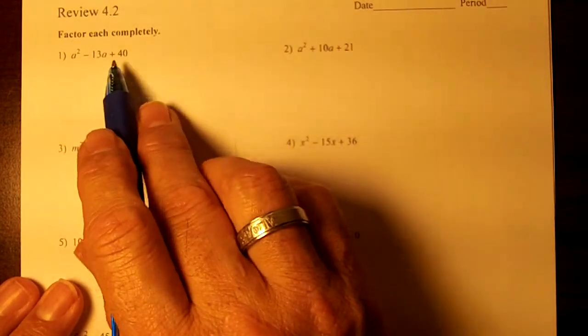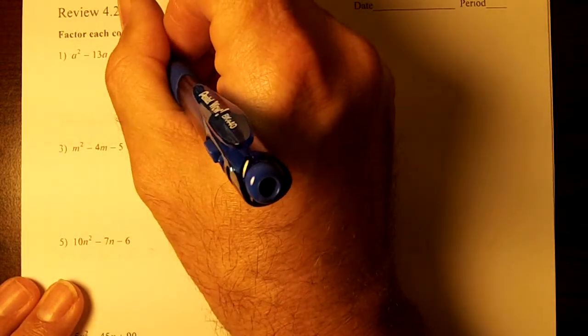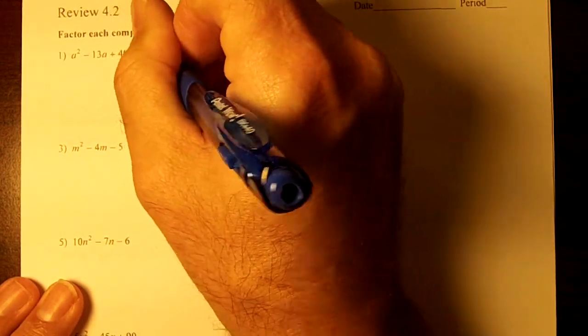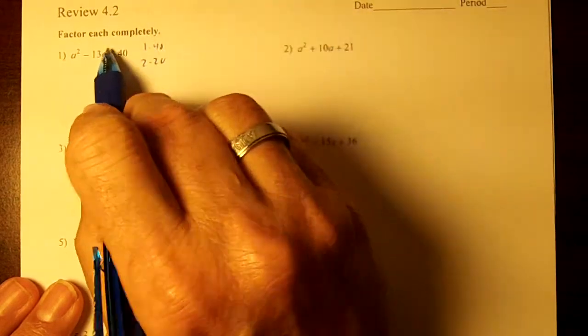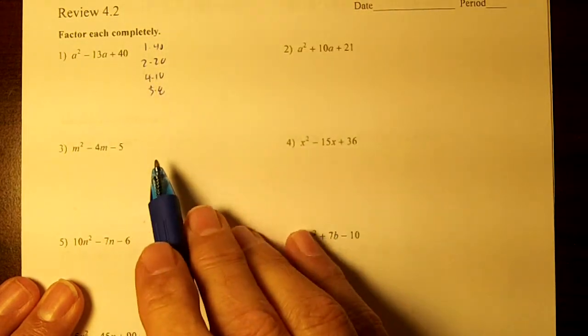The first problem here, a squared minus 13a plus 40. First thing you do is write down your factors of 40: 1 times 40, 2 times 20, 3 doesn't work, 4 times 10, and 5 times 8. So those are my factors of 40.